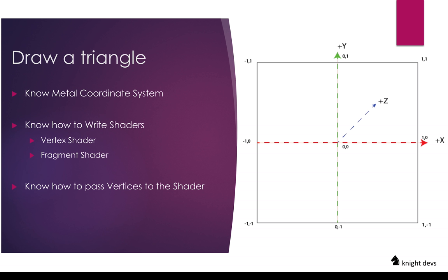If you want to draw a triangle you should also know how to write shader code. There are two shaders involved in a render pass: the vertex shader and the fragment shader. We will learn how to write both in this video. After that we should know how to pass the desired vertices to the shader.